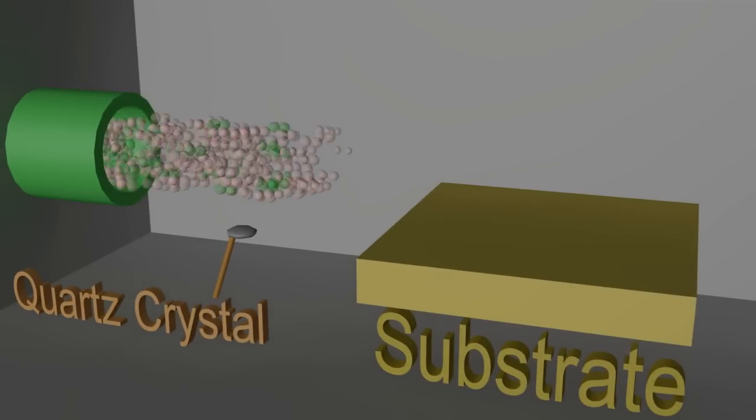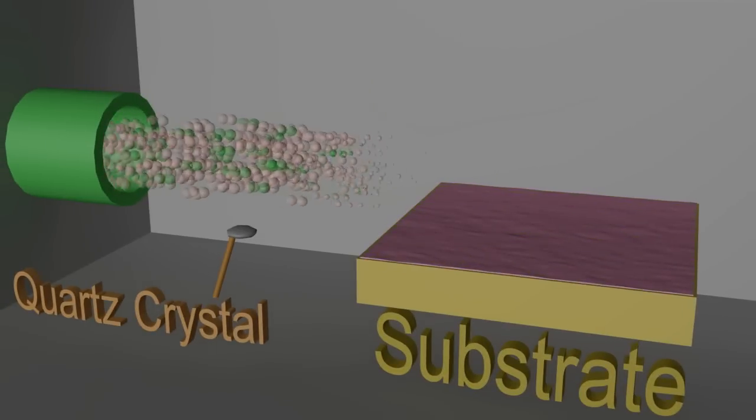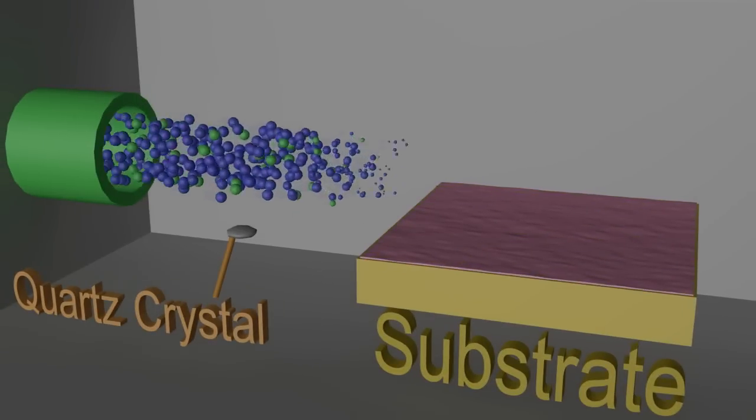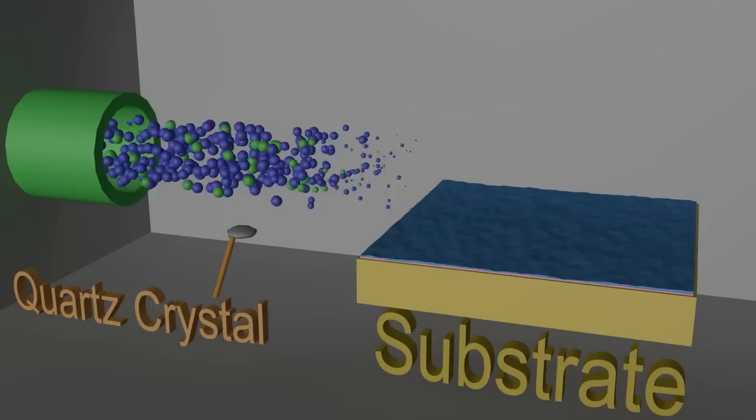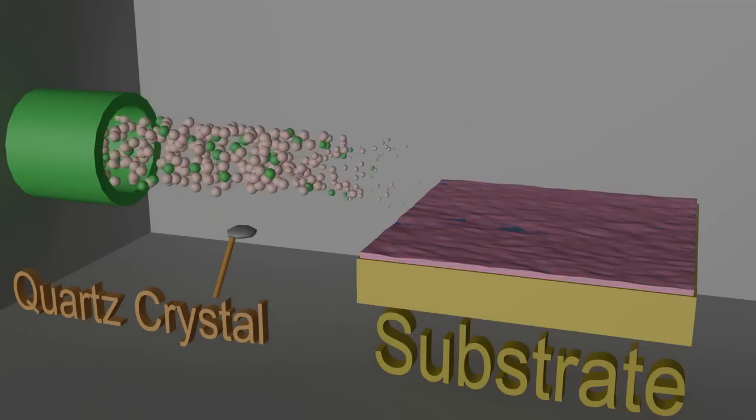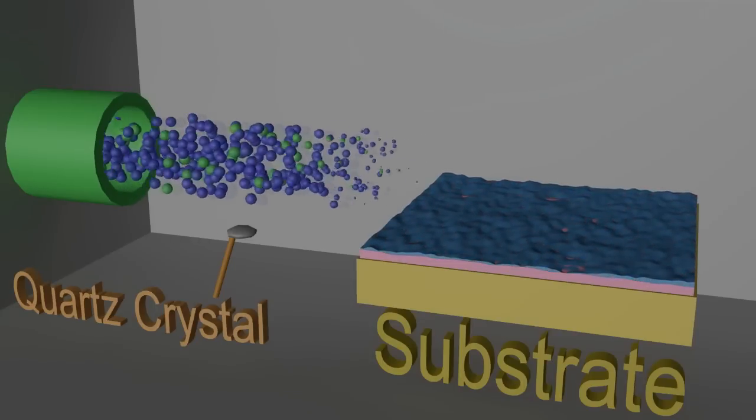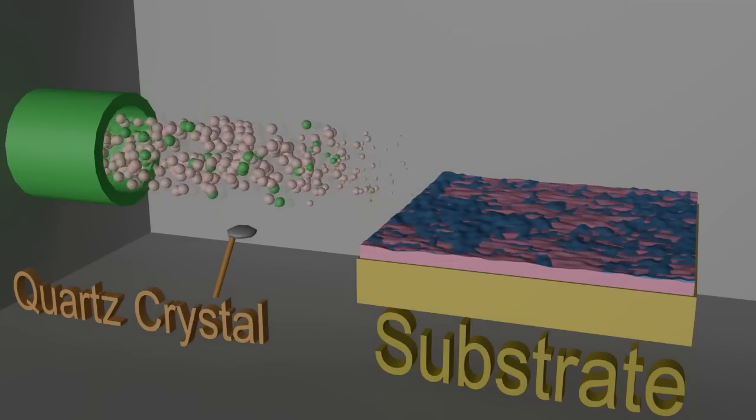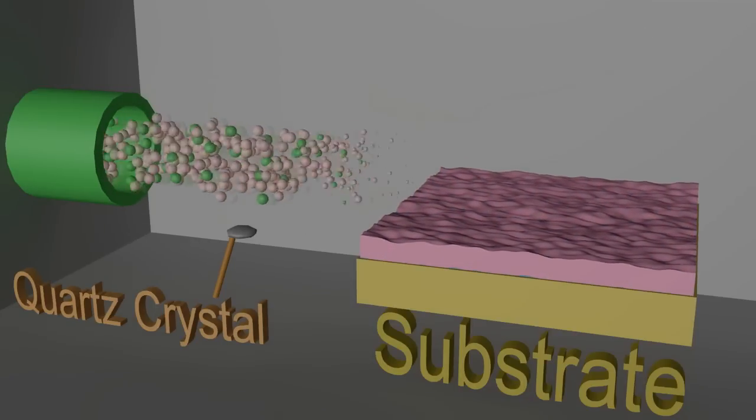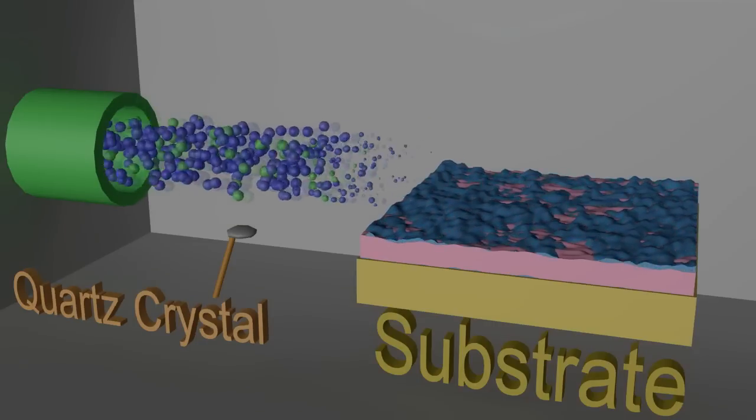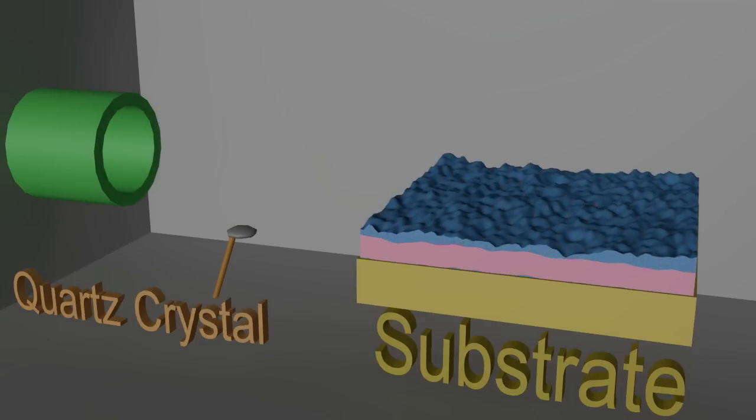The precursors enter the reaction chamber one at a time and react with the substrate in a self-limiting manner. As the substrate is repeatedly exposed to different precursors, a thin film of desired material is deposited in each cycle. The thickness of the final film depends on the number of cycles.